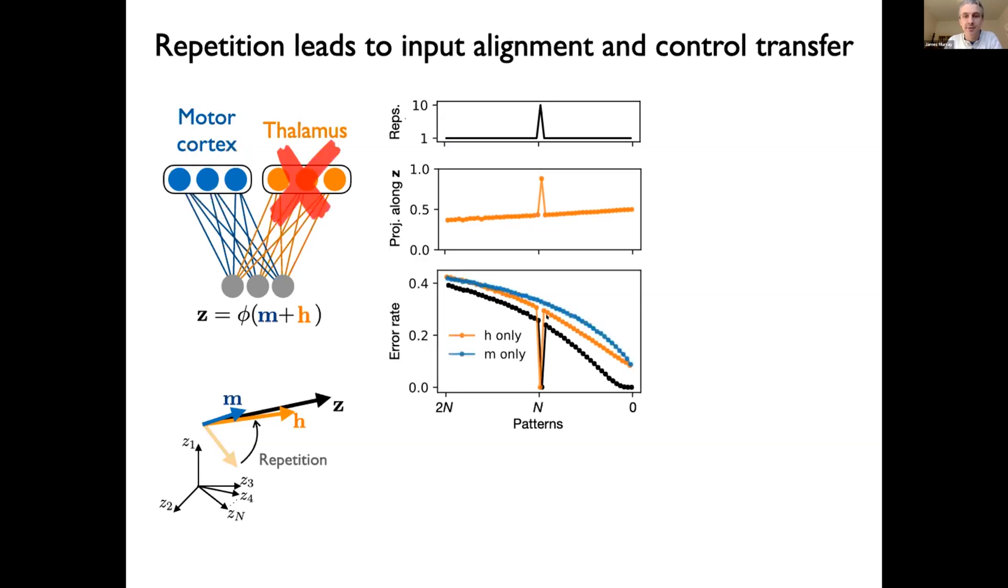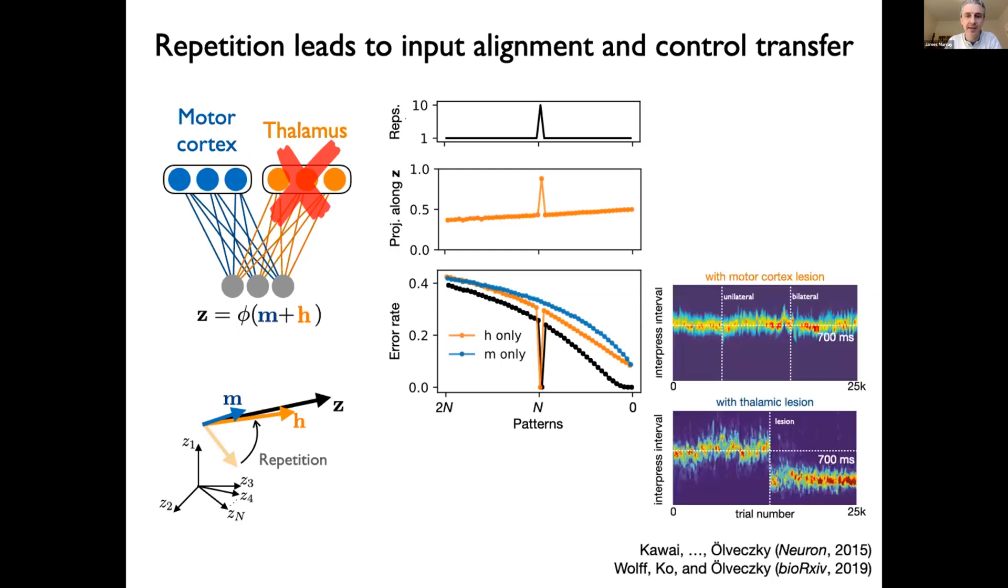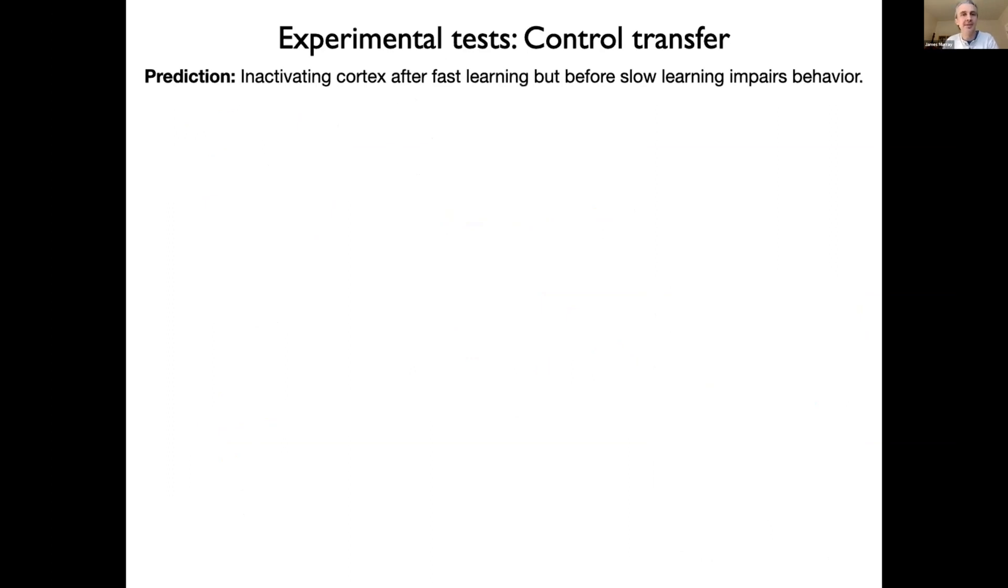And that's because of this control transfer that's taking place, whereby the thalamic input is responsible for driving activity in striatum. If, however, we remove the thalamic input, we find that this pattern is not retained and that it's overwritten because we constantly have fast learning and overriding in the motor cortex and we haven't consolidated this memory or we've lost the consolidated version of this memory in the thalamic pathway when we remove that input after training. And this should harken back to the experimental results that we started off wanting to explain. And this is kind of a post-diction of the theory since that's what we wanted to explain when we started, but we also made a couple of predictions in our theory. And I'll talk about one of those because subsequently a new paper has provided some evidence for it. And it concerns this idea of control transfer where inactivating cortex after fast learning, but before slow learning, should impair behavior.